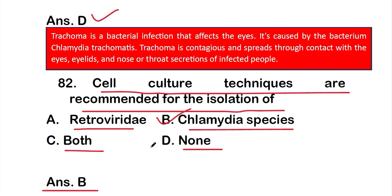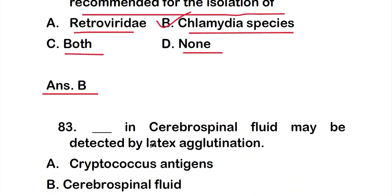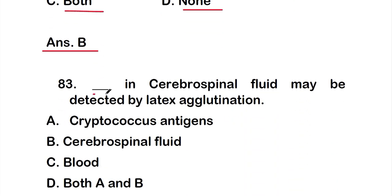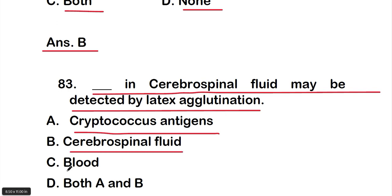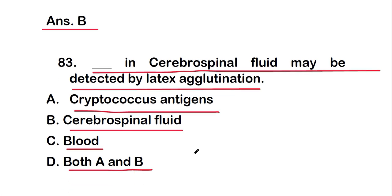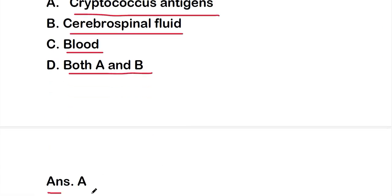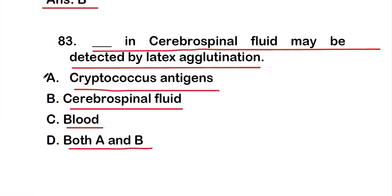Question number 83: blank in cerebrospinal fluid may be detected by latex agglutination. Options are: option A, Cryptococcus antigens; option B, cerebrospinal fluid; option C, blood; or option D, both A and B. The right answer is option A — Cryptococcus antigens in cerebrospinal fluid may be detected by latex agglutination.